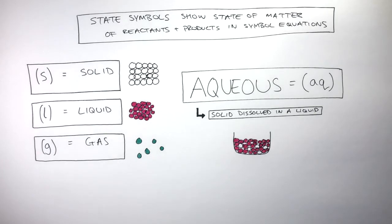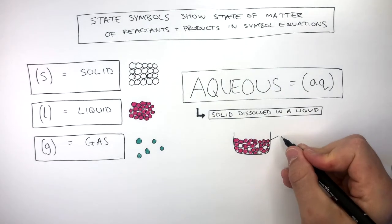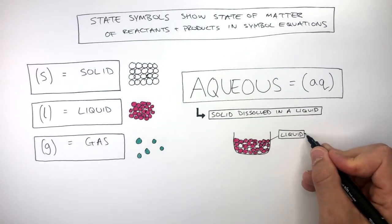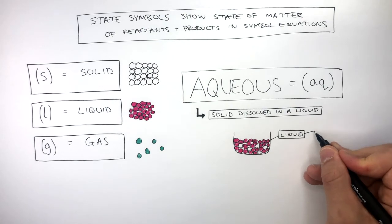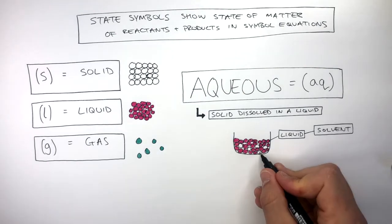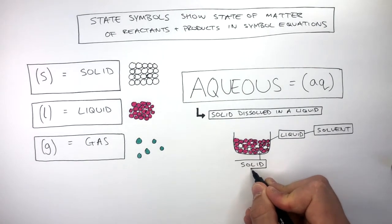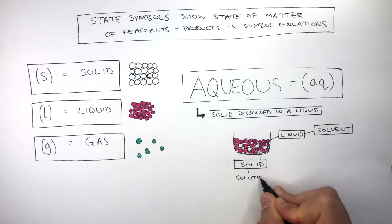We can represent this using a diagram where the pink particles are the liquid. And because the liquid is what the solid dissolves in, these pink particles are the solvent. The white particles are the solid. And because they have dissolved in the liquid, they are the solute. A solute is the substance which dissolves in a solvent. So aqueous just describes when a solid has dissolved in a liquid. That's all it is.